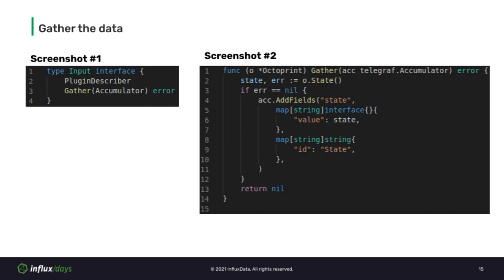Once you have the Go Shim in place, you can begin writing the functionality of your plugin. Each plugin has an interface it is required to conform to. For example, to make an input plugin, the gather method needs to be implemented, which takes an accumulator structure. The accumulator exposes methods that allow you to add metrics that will be processed and sent through Telegraph's processing workflow. In the screenshot above, you can see the gather method used by the OctoPrint plugin — printer state information is collected, and if there are no errors, it calls a method on the accumulator to save the state information.